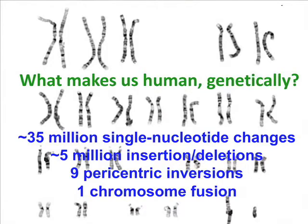We can rephrase this question and ask: what makes humans unique genetically? Because we have the complete genome sequence of chimpanzee and human, we can answer this with great precision. We can find all of the places in our genome where we differ from chimpanzee. The genome is 3 billion base pairs long — you get 3 billion from mom and 3 billion from dad. Chimpanzees is about the same, about 3 billion. About 35 million of those are different between chimpanzees and humans — that's about 1 in 100 places — but it adds up to over 30 million.